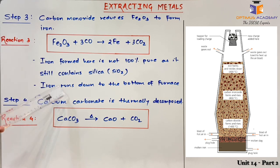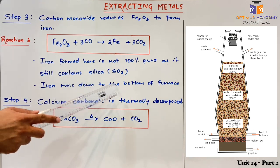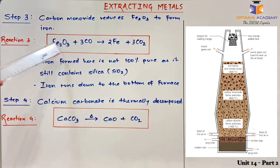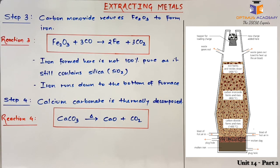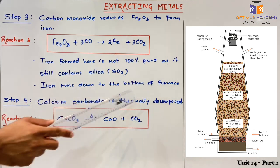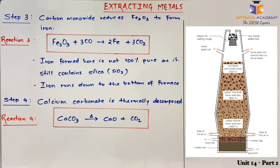Iron runs down to the bottom of the furnace, because by the time this reaction takes place, the temperature of the blast furnace is so high that it crosses the melting point of iron. Hence, liquid droplets of iron run down to the bottom of the furnace and are collected there.